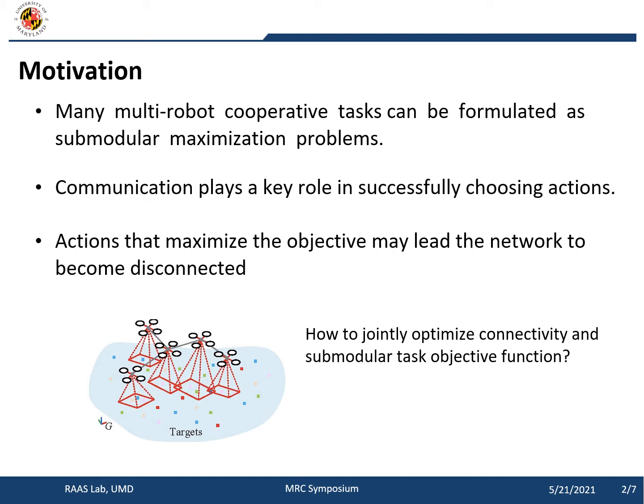One observation we have in this paper is that actions that maximize the objective may cause the network to become disconnected. Take active target tracking, for example. The goal is to maximize the number of targets observed at each planning epoch. To achieve that, we want robots to be separated from each other as far as possible to reduce the overlap in sensor footprint. But being too far away from each other may break the connectivity. Therefore, the key problem we consider in this paper is how to jointly optimize connectivity and the submodular task objective functions.